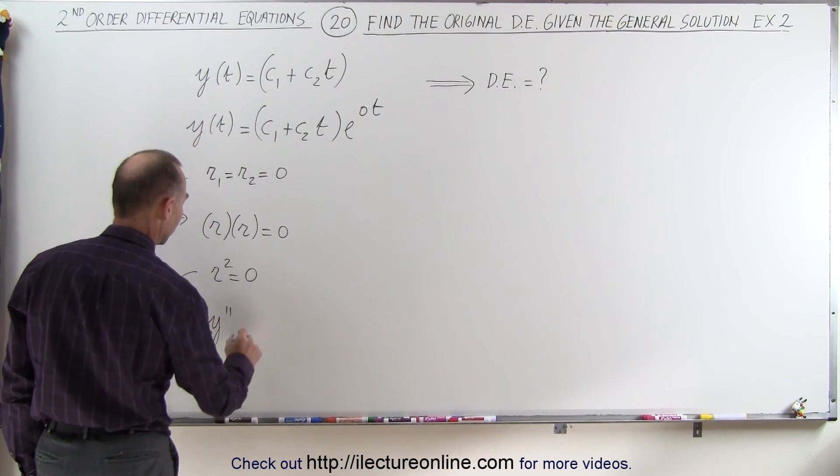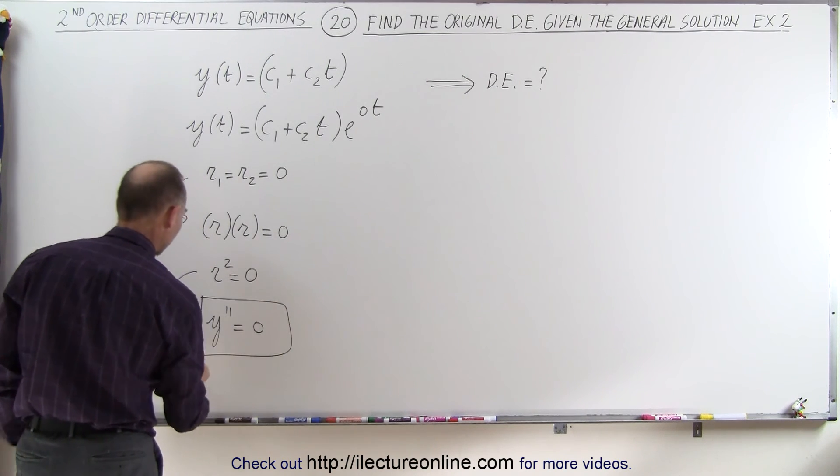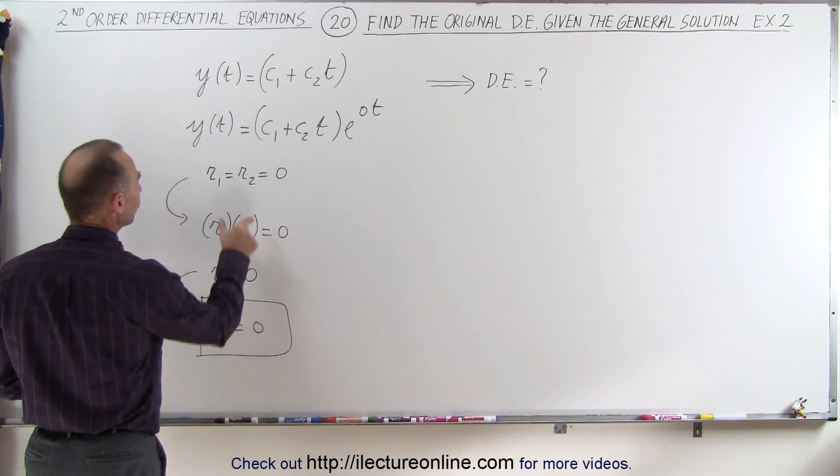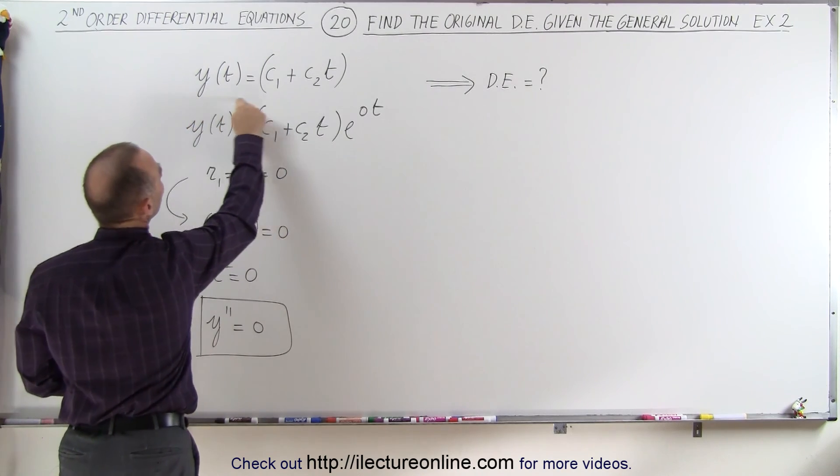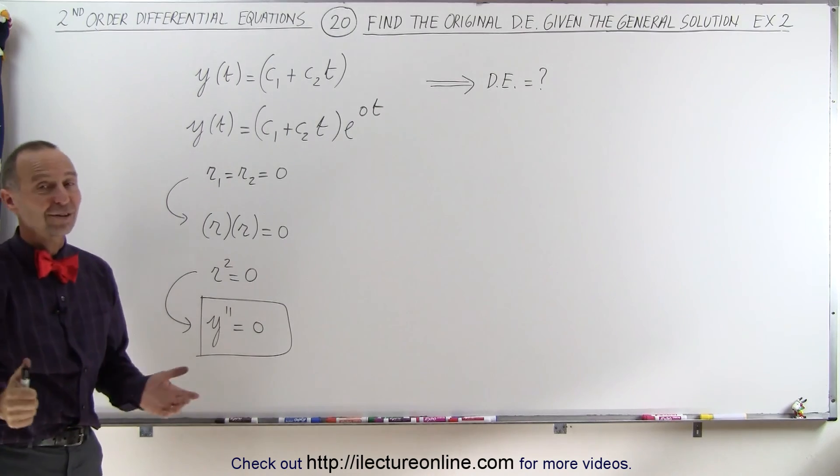The only term that's left is the y double prime term. And so this becomes y double prime equals 0, and that is the differential equation, which gives this as the characteristic equation, which means the two roots are the same and equal to 0, which means that this then is the general solution to this differential equation. And that's how it's done.